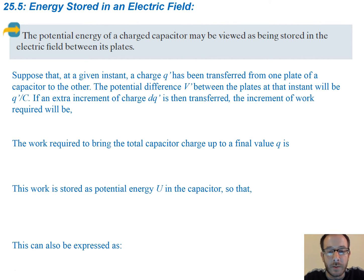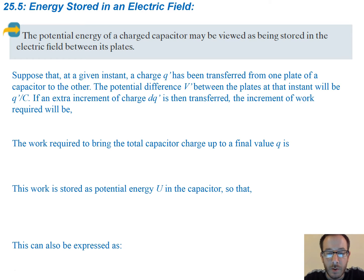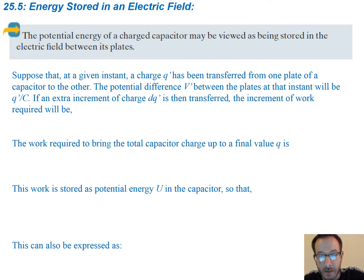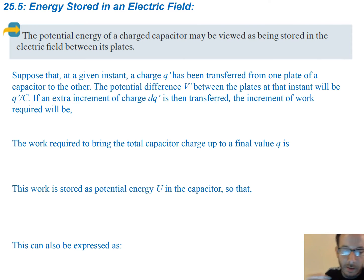The potential energy of a charged capacitor may be viewed as being stored in the electric field between the plates of the capacitor. Now suppose that at a given instance a charge Q' has been transferred from one plate of a capacitor to the other. The potential difference V' between the plates at that instant will be Q' divided by C. Now if an extra increment of charge DQ' is then transferred, the increment of work required will be just given by...